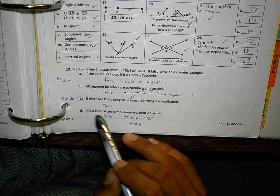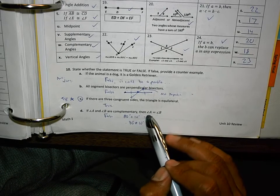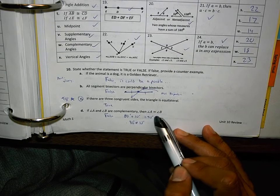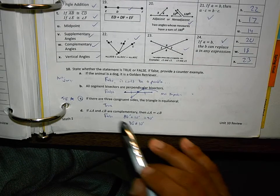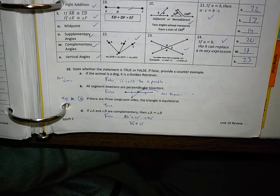D. If angle A and angle B are complementary, then angle A is equal to angle B. And I put false because these can be complementary, but they're not equal to each other. That was my example.